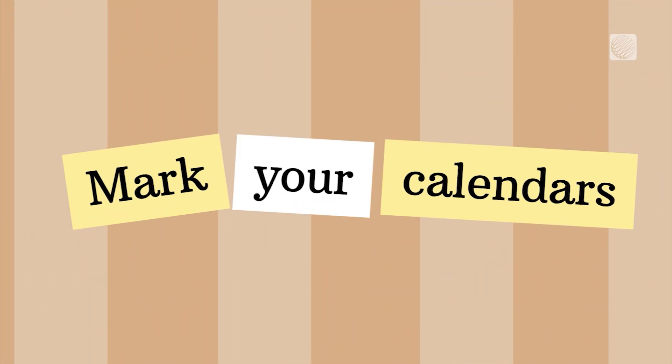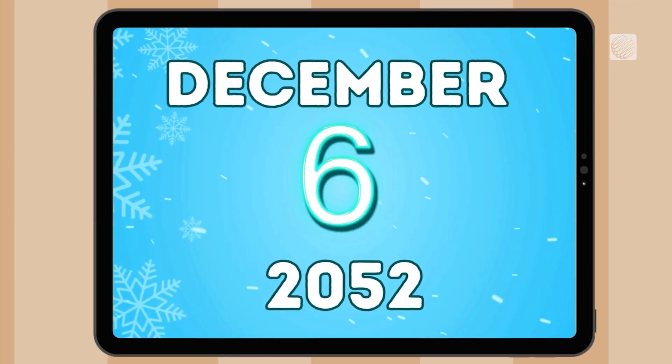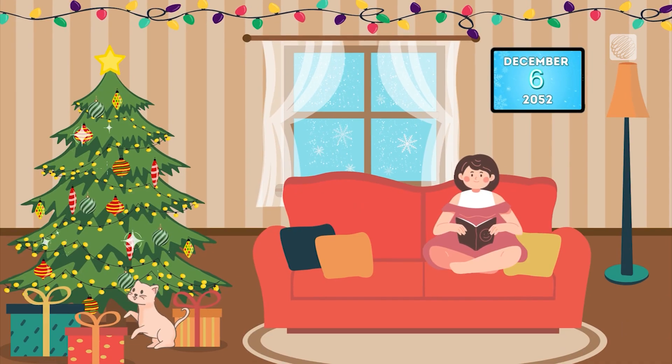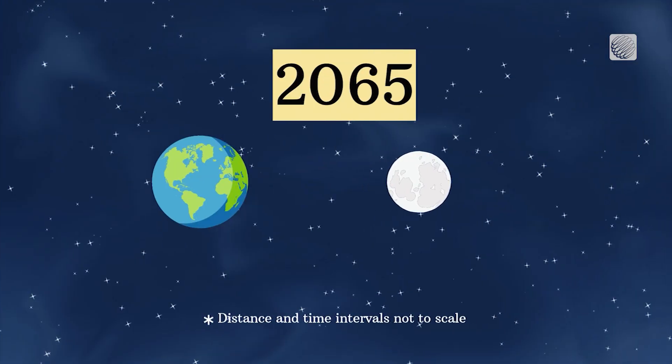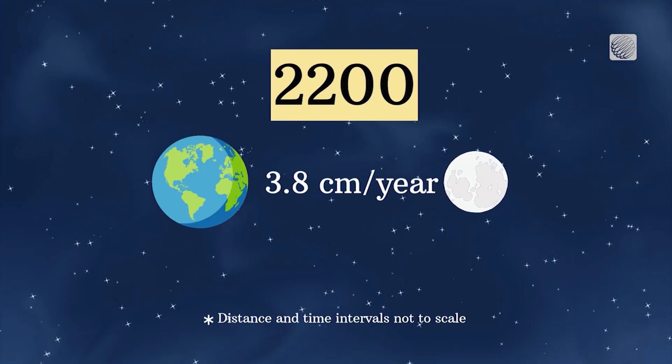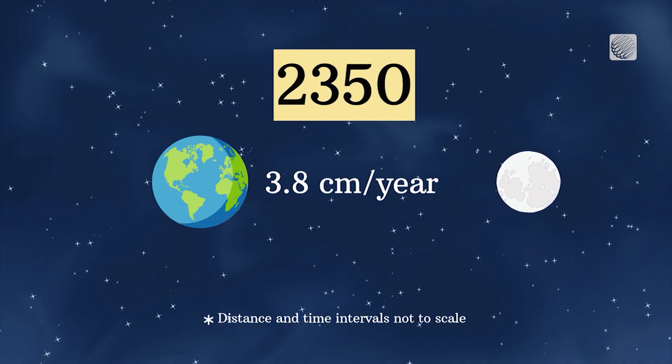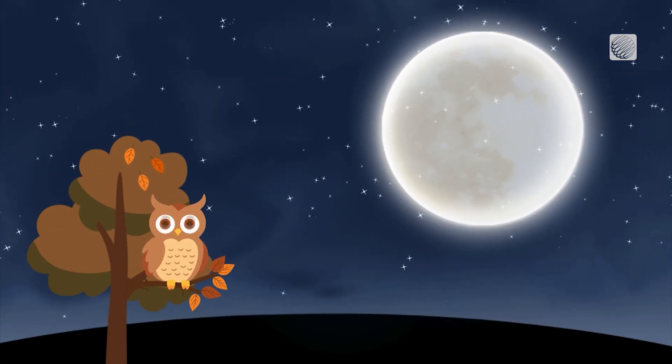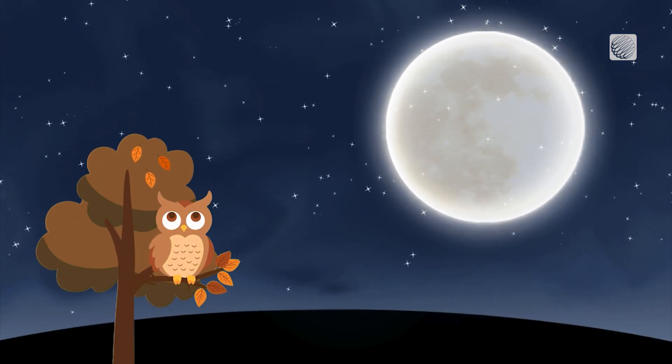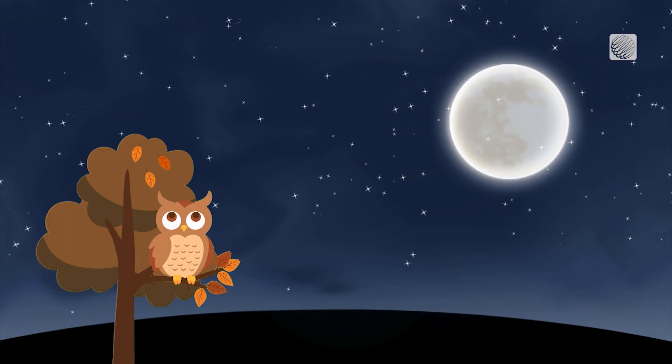Mark your calendars because the closest supermoon of this century will occur in 2052. And because the moon is gradually moving away from Earth at about 3.8 centimeters per year, the moon and its supermoons will look increasingly smaller in our night sky in the centuries ahead.